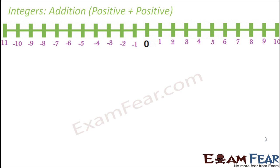Let us now look at addition of integers more formally. You might be thinking — right now we are drawing number lines, but what if we have to add bigger integers like 1005 plus 216? We cannot draw number lines for such big numbers. We are drawing number lines right now to make you understand the concept behind addition of integers. Let us take some simple examples to understand addition of a positive integer with another positive integer.